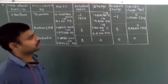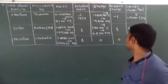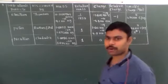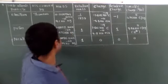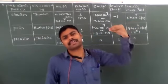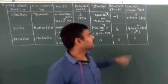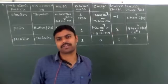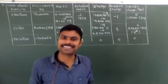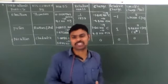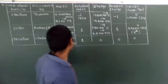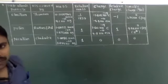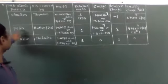The specific charge of electrons is always fixed. Whatever gaseous substance you take in the electric discharge tube, the specific charge of electrons is always 1.76 × 10¹¹ Coulombs per kg.